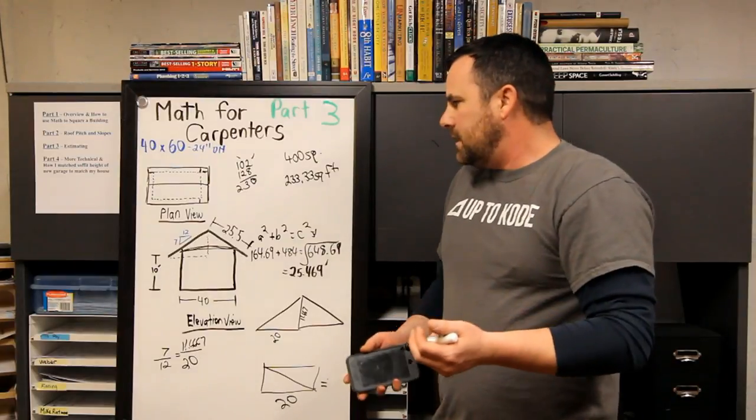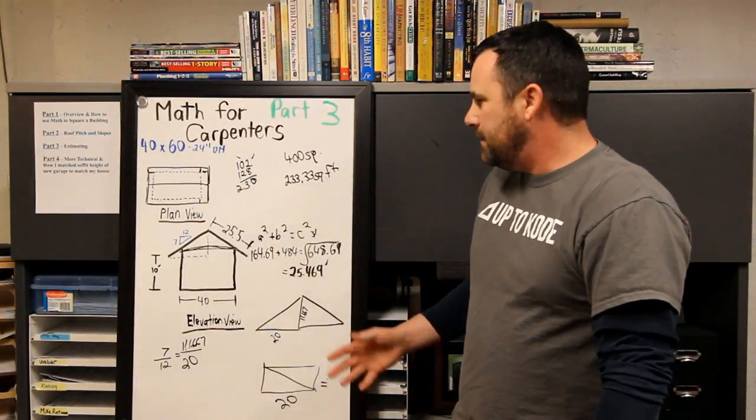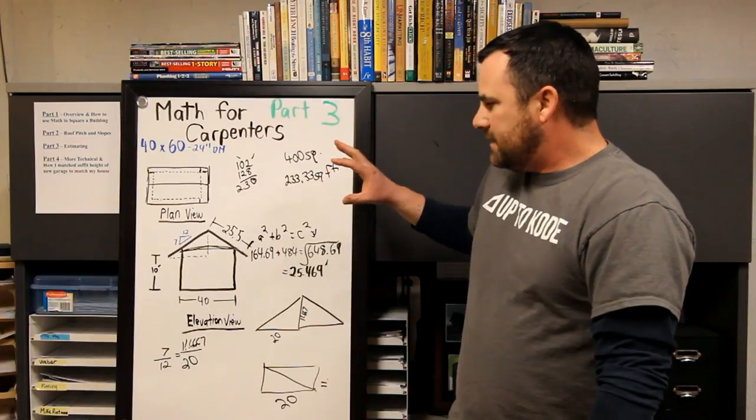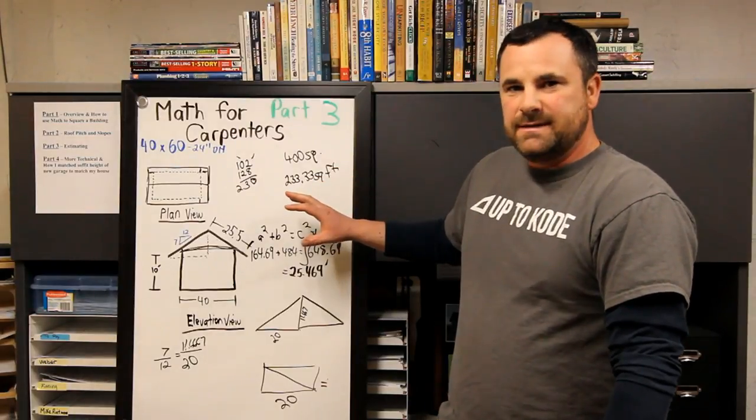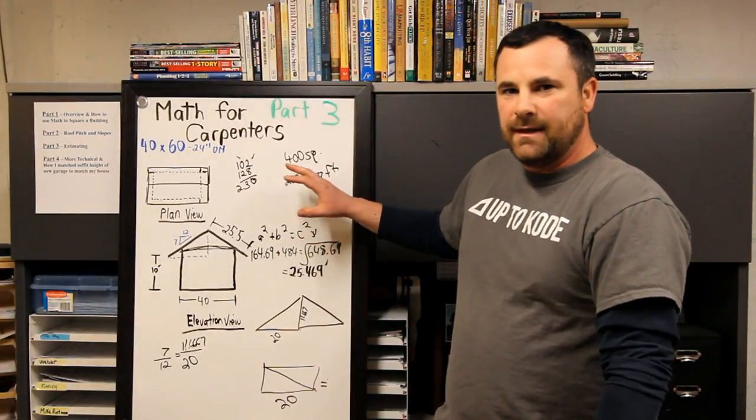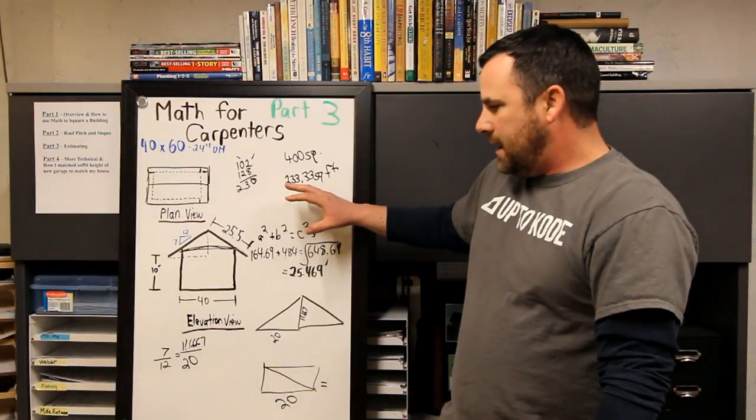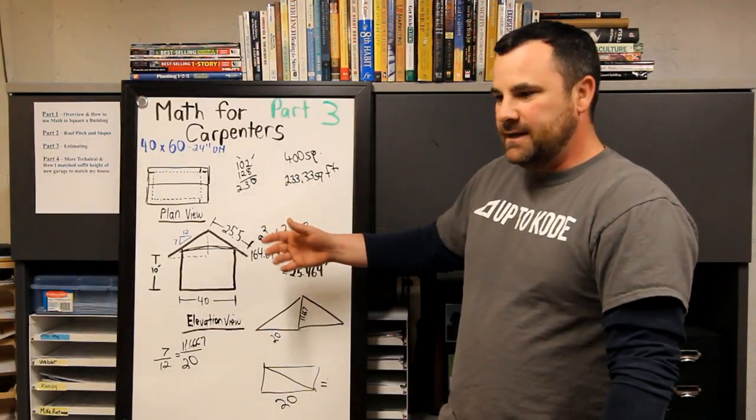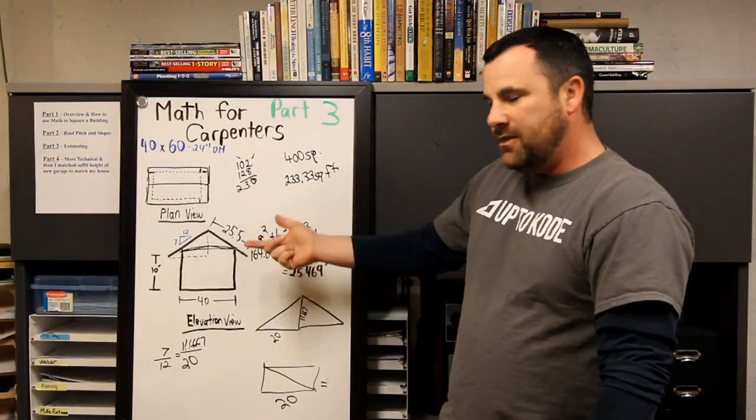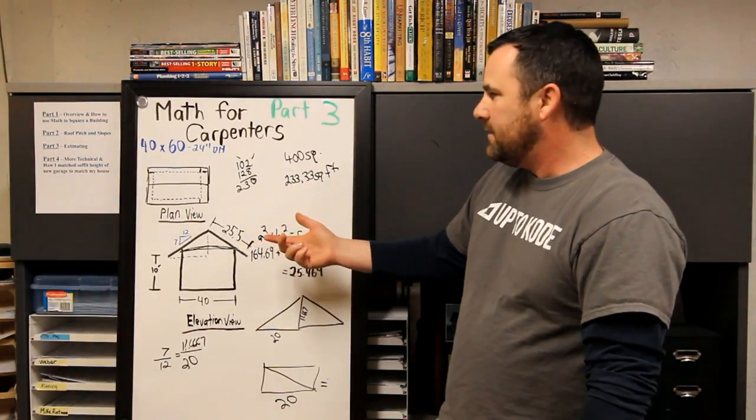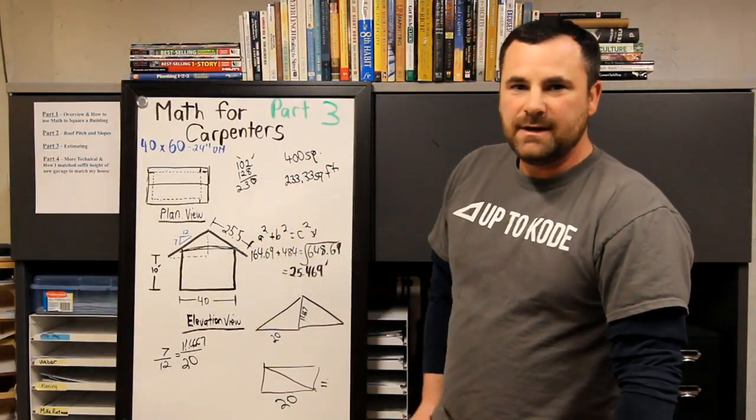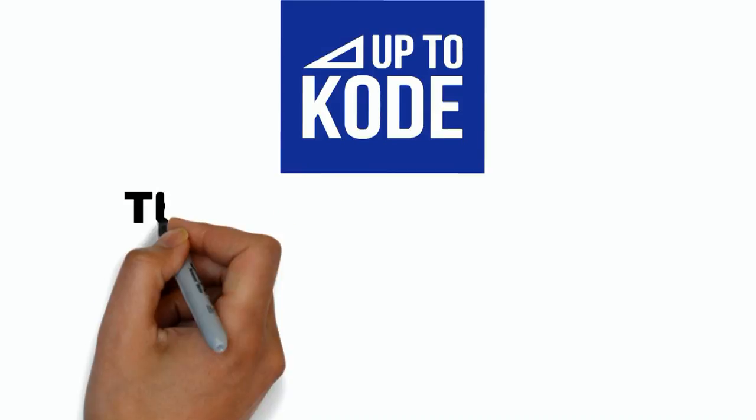So I hope that helps, you know, for anyone who's experienced, obviously that's elementary. But you know, this math is simple, like I said, but it's helpful. It gives you that edge and it makes your life a lot easier in the field and in theory when you're quoting and that kind of thing. So that's part three. Stay tuned for part four.